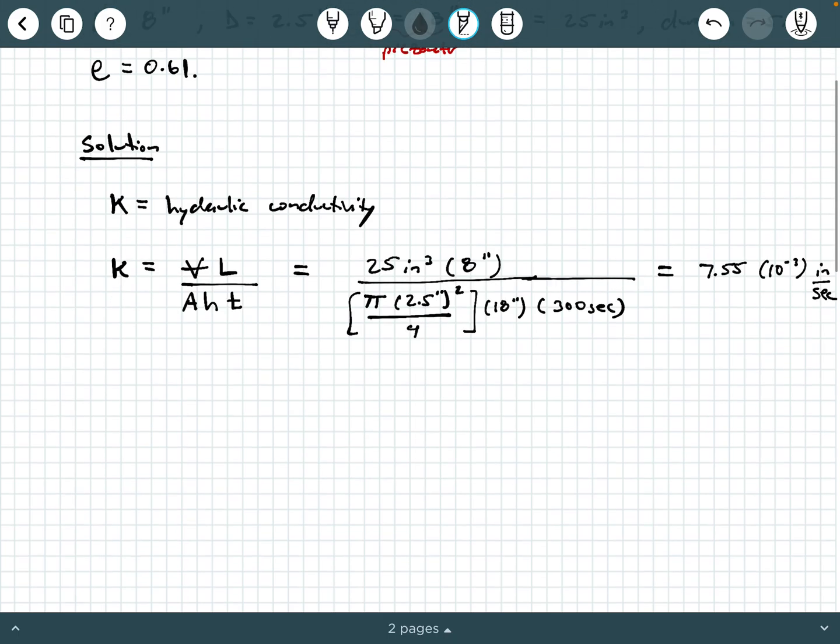What about the discharge velocity? So that's going to be v. Little v is discharge velocity. Now, when we calculate discharge velocity, that's very simple. That's just hydraulic conductivity times hydraulic gradient.